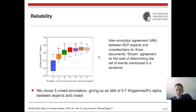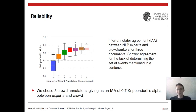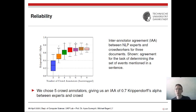We decided to annotate the full corpus with five crowd annotators per instance, giving a nice trade-off between quality and cost. This yields a Krippendorff's alpha of 0.7. Usually the threshold for good agreement is 0.8, but for a hard task like this one with crowdsourced data, 0.7 is really good.